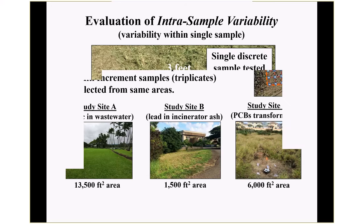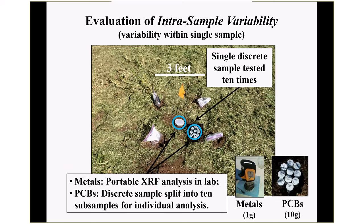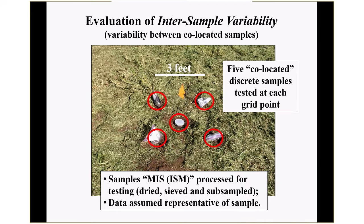We wanted to look at two things. First, intra-sample variability — where the lab gets a sample and plucks out a gram or a spoonful to test independently. For the arsenic and lead sites, we collected a sample as undisturbed as possible and used a portable XRF to test each sample ten times. For the PCB site, at each of the 24 grid points, we collected what would have been a single discrete sample, broke it up into ten small jars, and had the lab test each jar. We also looked at inter-sample variability — at each grid point, we collected five co-located discrete samples, each processed using MIS methods with samples that were dry, sieved, and carefully subsampled.